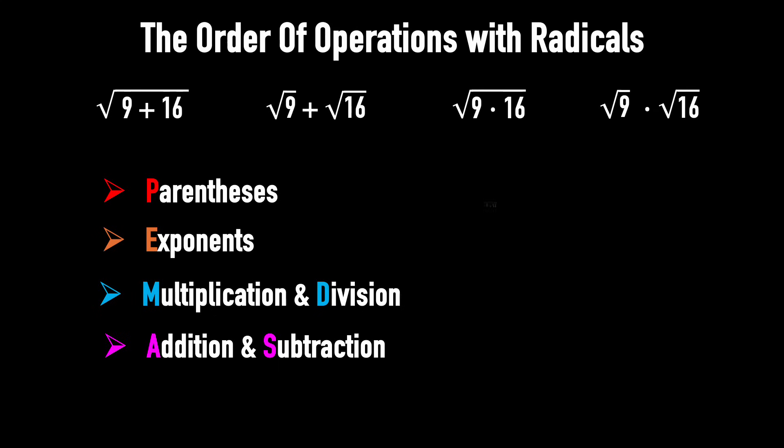Example 1. Find the square root of 9 plus 16. Because we can rewrite a radical as an exponent, we can apply the order of operations for exponents to radicals. Also, in this exponential form, you can clearly see parentheses around 9 and 16.